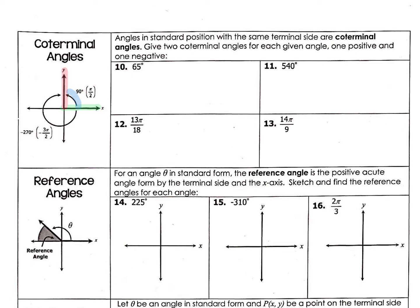If you recall from yesterday's lesson, this is zero degrees and this is 90 degrees. But we can also go backwards — we can start here on the initial side and go all the way clockwise and land in the same place. So I'm going to highlight that path.